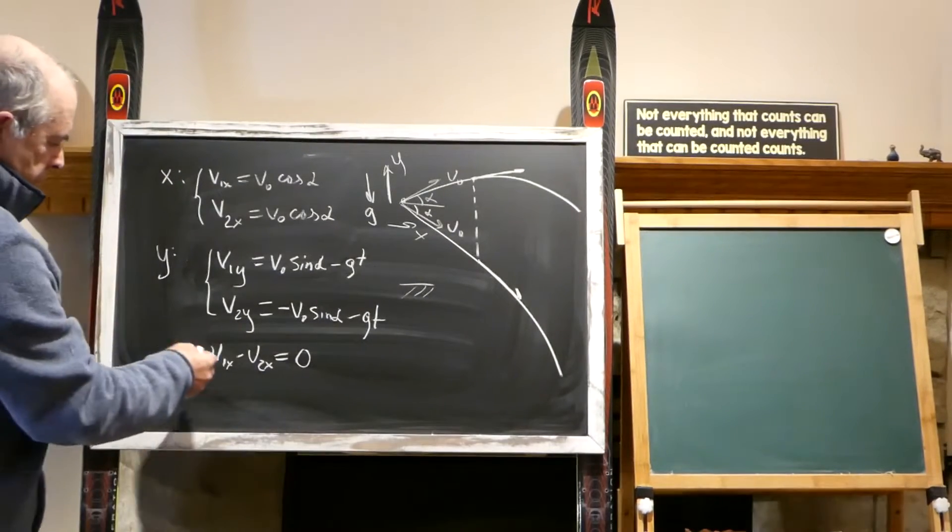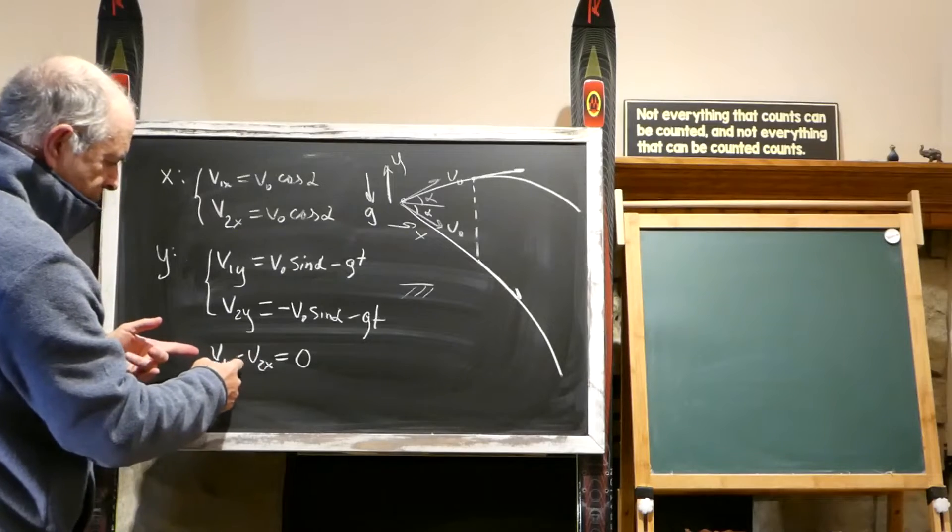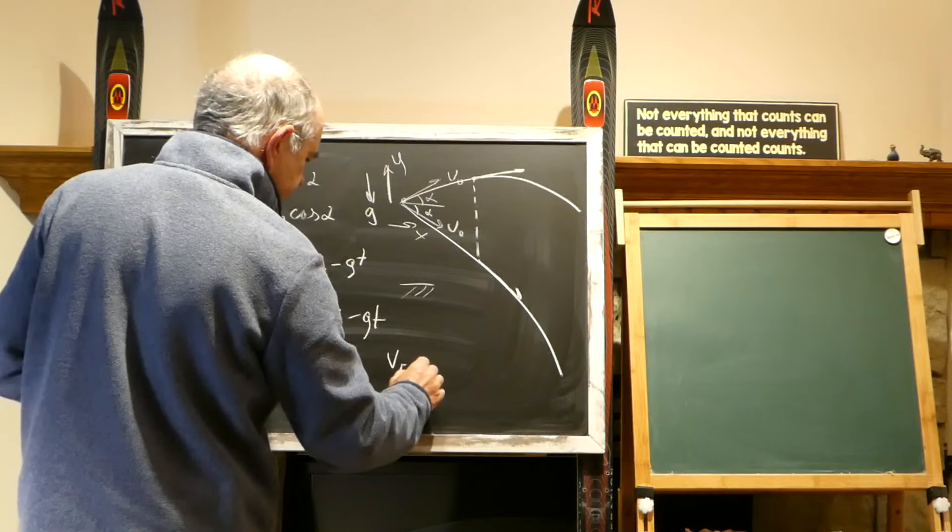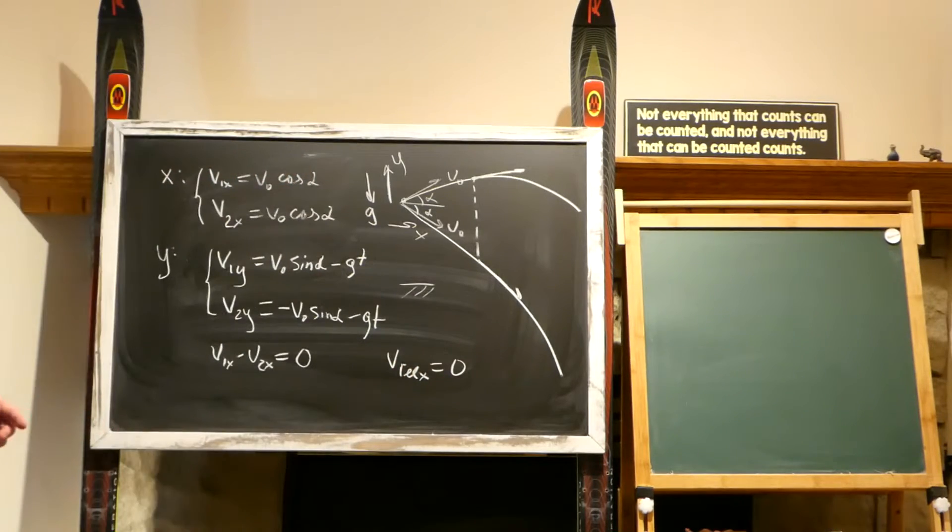That means that the speeds are the same, and v1 minus v2x is v relative x, and we have v relative x equals zero.